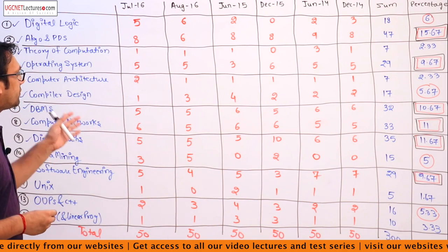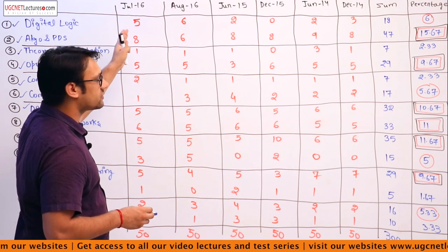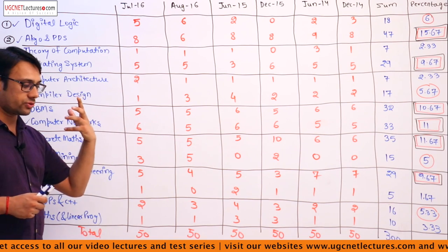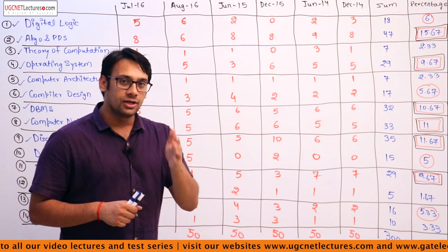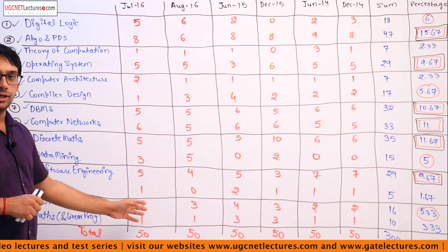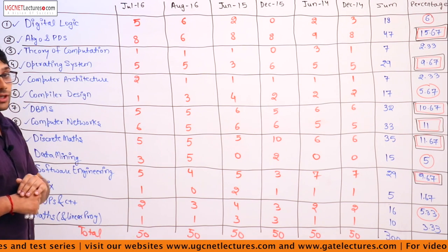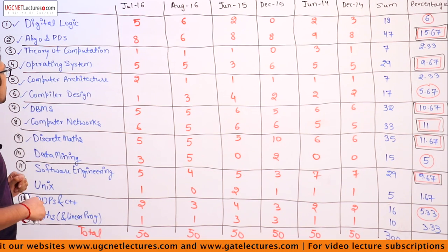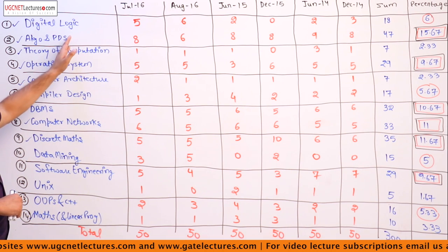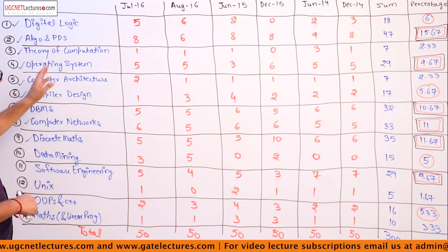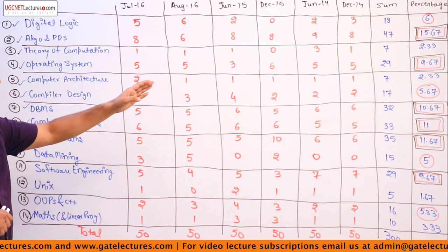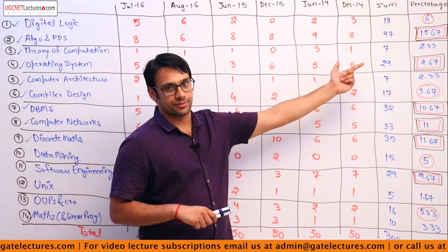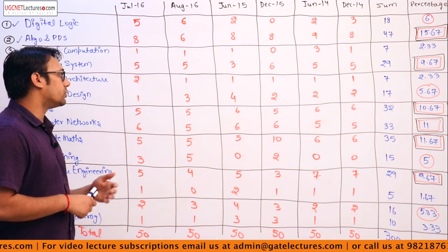We will see the analysis of each question paper. For July 2016, out of 50 questions in Paper 2, approximately 5 questions are from digital logic, which is around 10%. For algorithms, programming, and data structures, there are 8 questions. Theory of computation has very small weightage in all these examinations — you can ignore theory of computation for Paper 2.